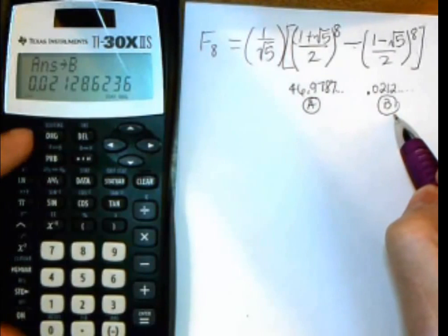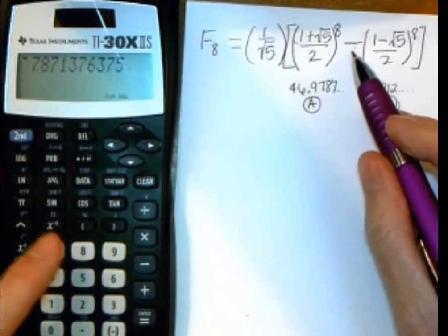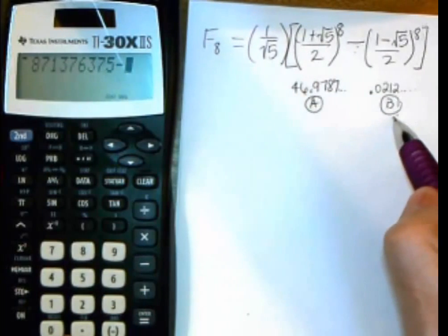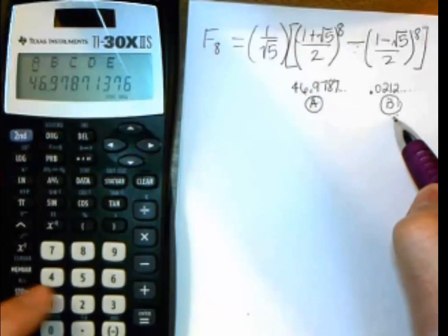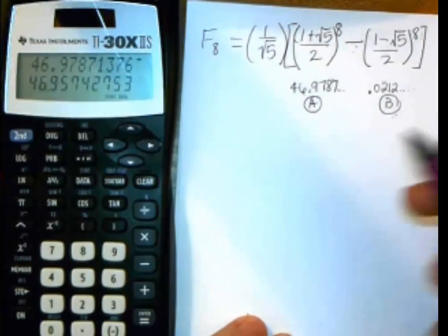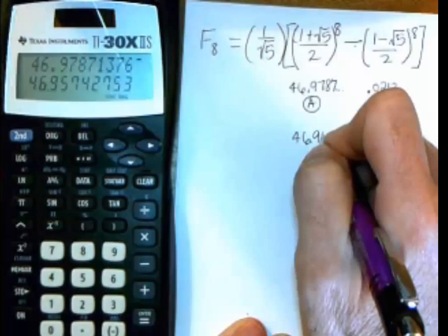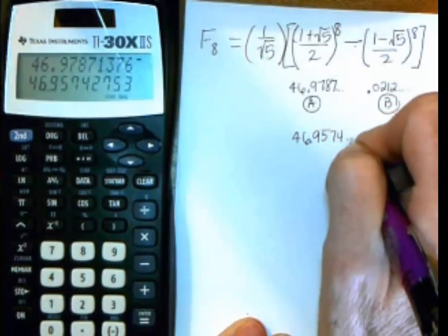And now I want to take A minus B. So I'm going to do recall. And there's my A. So enter. And then minus. So I'll put in the minus. And then recall B. So recall. Move over to B. Push enter. Enter one more time. And now I've got 46.9574. And it's going on and on.